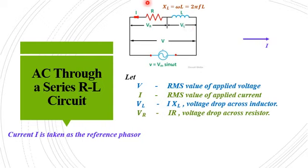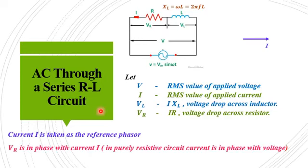Next we need to draw the voltage phasors. First, the voltage across the resistance Vr — for a purely resistive circuit the current is in phase with the voltage. This relation we have already derived. So Vr is in phase with the current, and the Vr phasor can be drawn in the same direction as the current phasor.